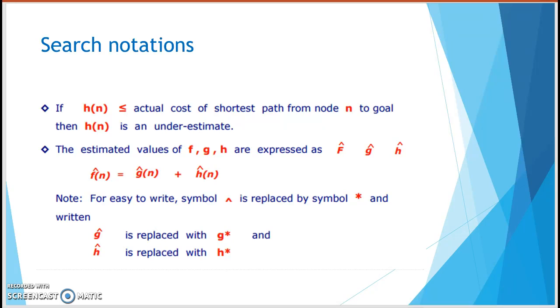HN as I said is an estimate from N to goal. So if the heuristic function is less than actual cost, so we call this as underestimate. So similar with buying things, if you underestimate the price, so basically end up you have to spend more than what your budget is. So this is not good if the HN is less than actual cost. For notation or writing style, you can use the head here or there's an S3.